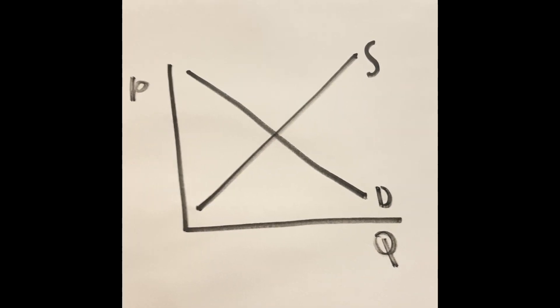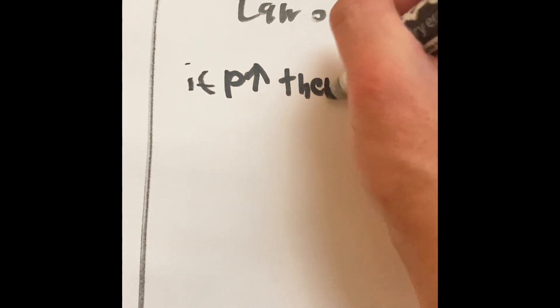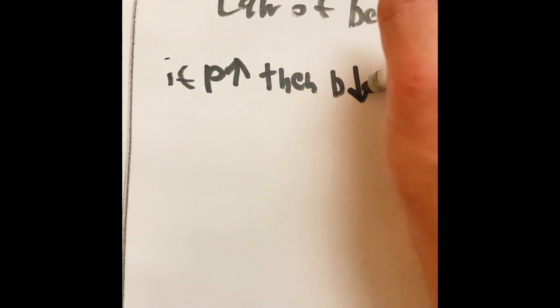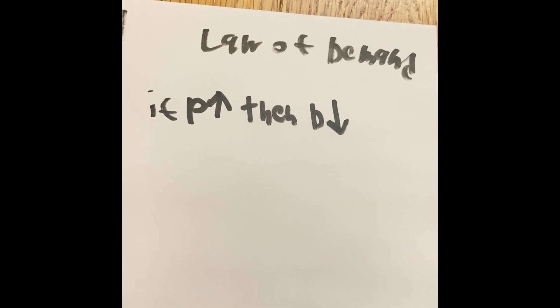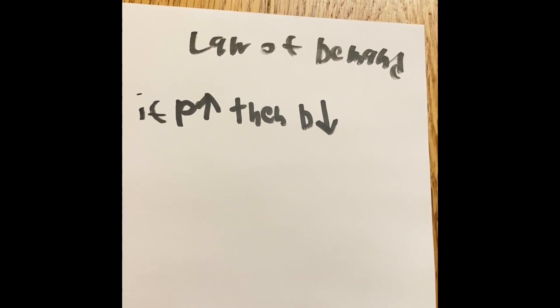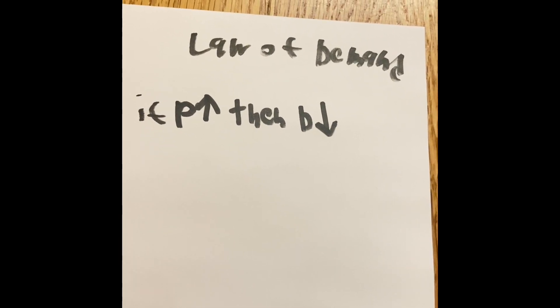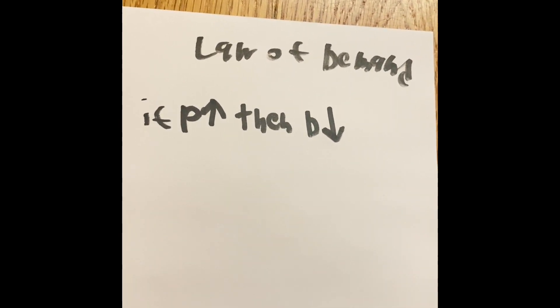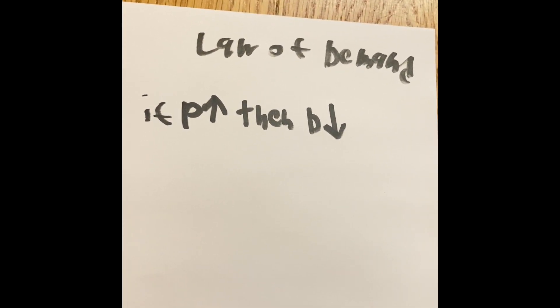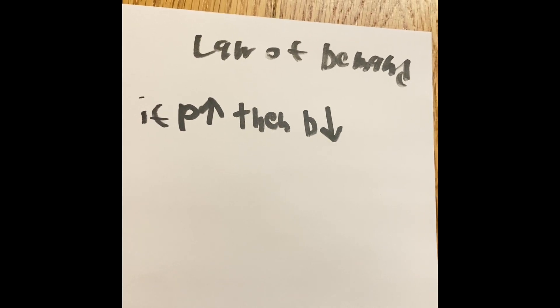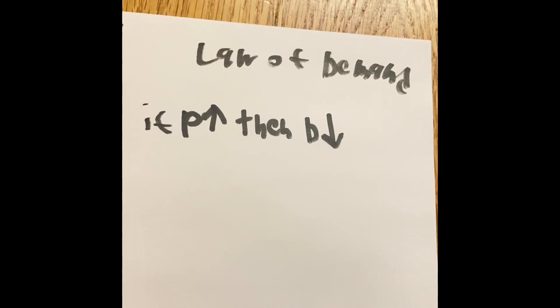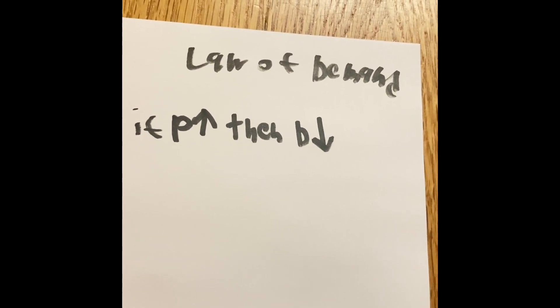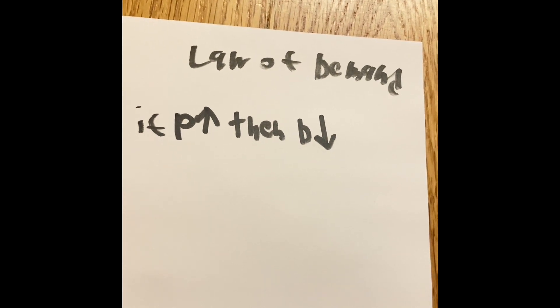But why does that happen? We're going to say, if the letter P stays up, then we're going to say the demand is going to go down. But the reason why this happens is if we have a lot of stuff or if we have really expensive stuff, then we can purchase that item or we can go to another store that sells the same item and the same quality but at a lower price.